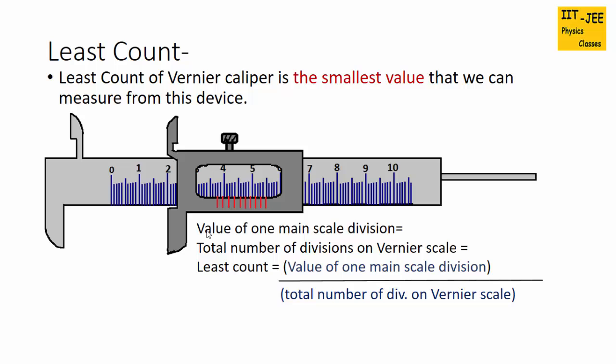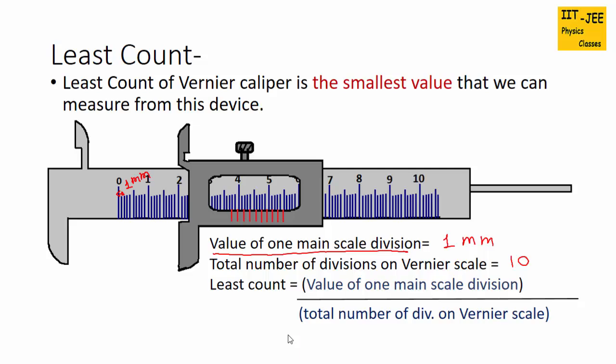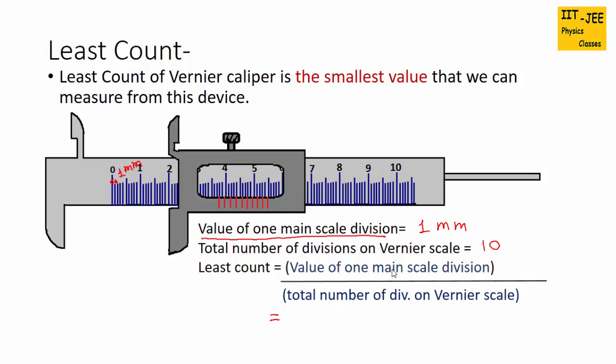First, we need to find out the value of 1 main scale division, which is 1 mm. Then find out total number of divisions on vernier scale. This vernier scale has 1, 2, 3, 4, 5, 6, 7, 8, 9, 10 divisions. Just plug in the values in the formula of least count: value of 1 main scale division, 1 mm, divided by total number of divisions on vernier scale, that is 10. So the least count of vernier scale would be 0.1 mm.